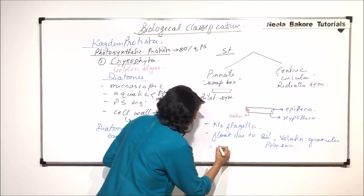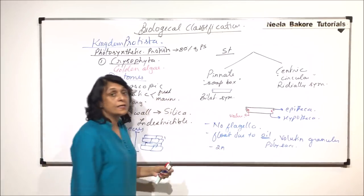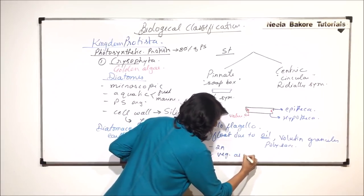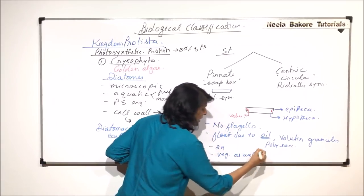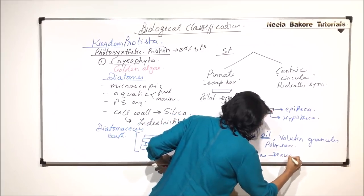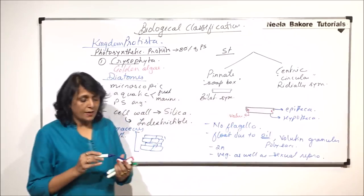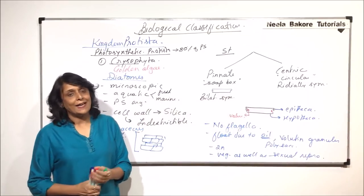They are diploid, that means 2N. Reproduction is vegetative as well as sexual reproduction. Both types of reproductions are seen in case of diatoms.